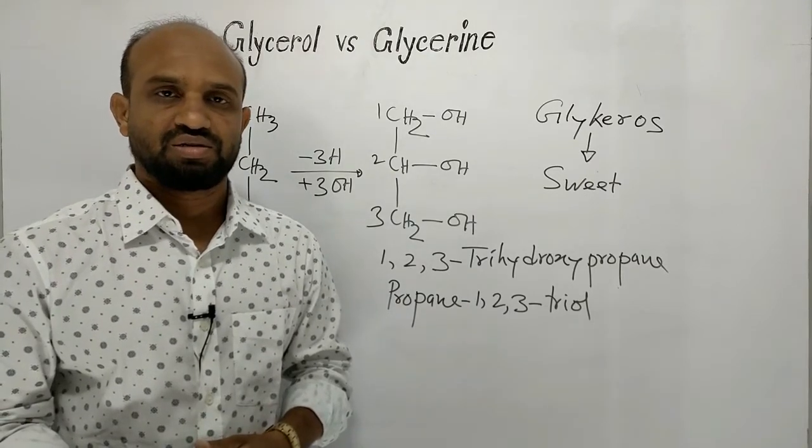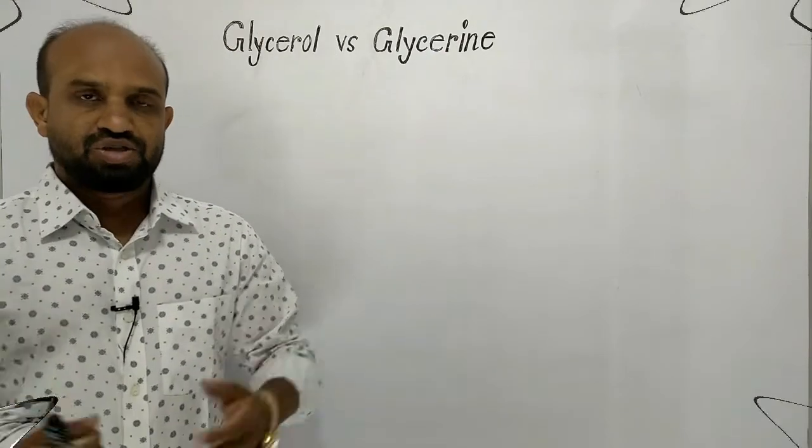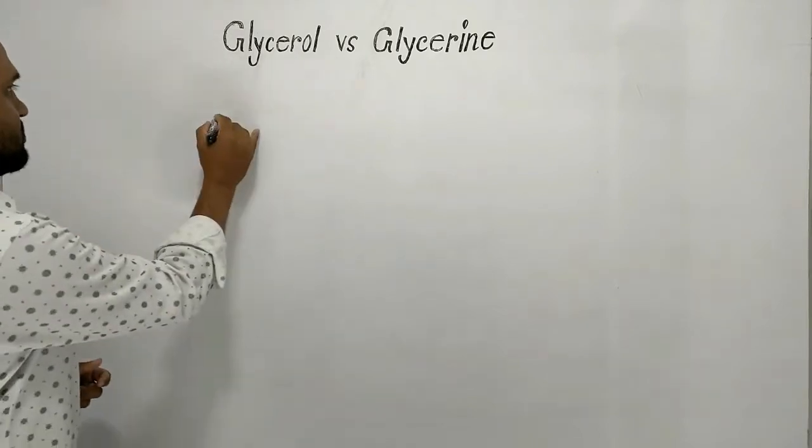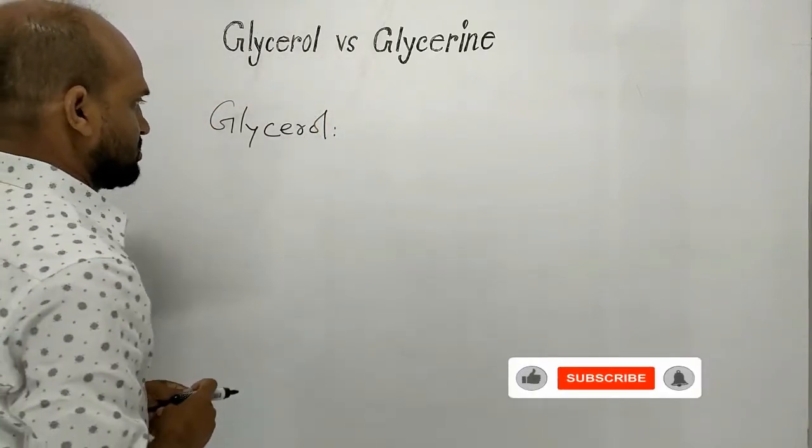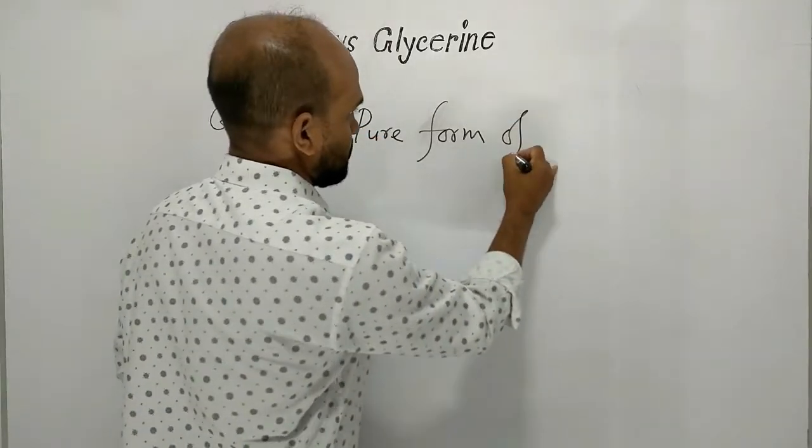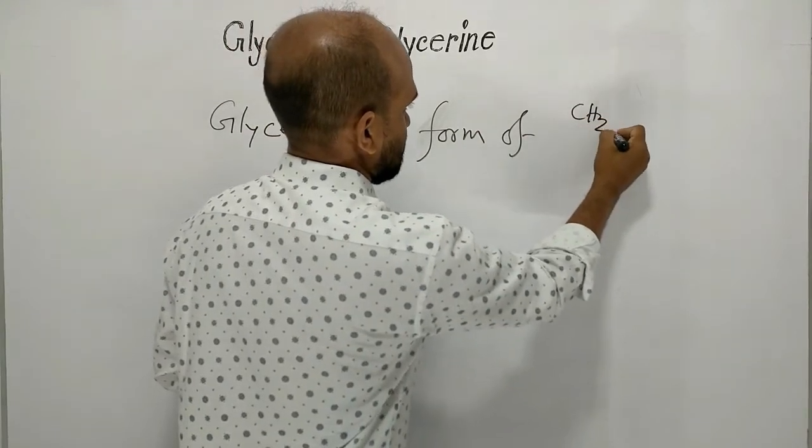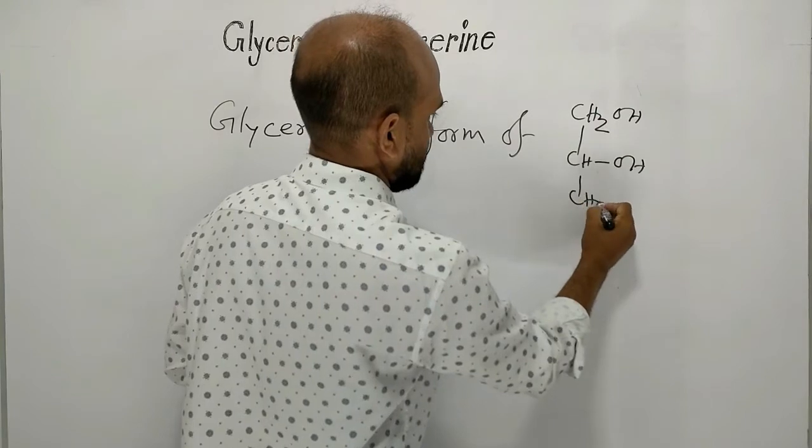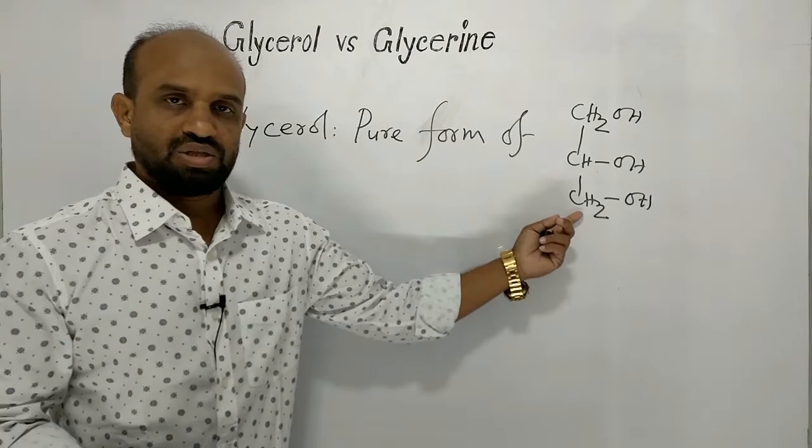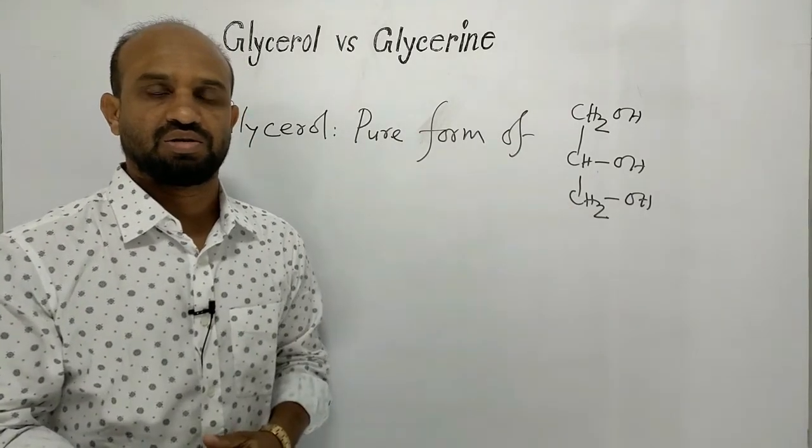Nevertheless let's try to find a slight difference between them. Difference between glycerol and glycerin. Glycerol is the pure form of 1, 2, 3-trihydroxy propane. That means when this is in pure form then it is called glycerol.